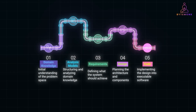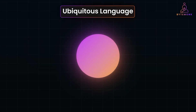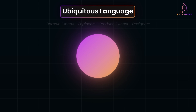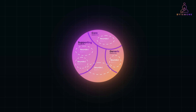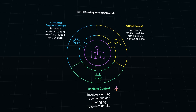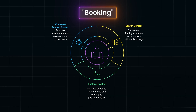Previously, we learned how ubiquitous language ensures that everyone — engineers, domain experts, and other stakeholders — share the same understanding of the business domain. But as a project grows, you might notice that the same terms can mean different things in different parts of the system. This is where bounded contexts come into play. Bounded contexts help define the boundaries where the ubiquitous language applies, ensuring clarity and preventing misunderstandings. Let's dive deeper into what a bounded context is and why it's essential in domain-driven design.